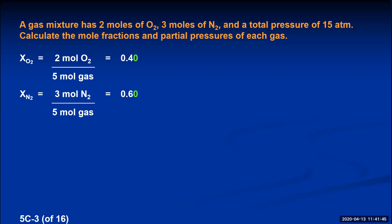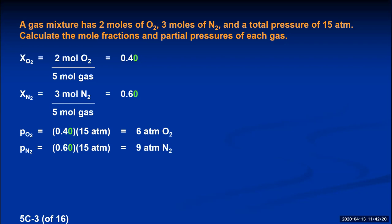Once you know the mole fractions, here's how to calculate partial pressures. Since oxygen makes up 40% of the molecules, it accounts for 40% of the pressure. So 0.4 times 15 atmospheres gives a partial pressure of oxygen of 6 atmospheres. Nitrogen's partial pressure is 0.6 times 15 atmospheres, which equals 9 atmospheres. Notice these add up to 15 — partial pressures always sum to the total pressure.